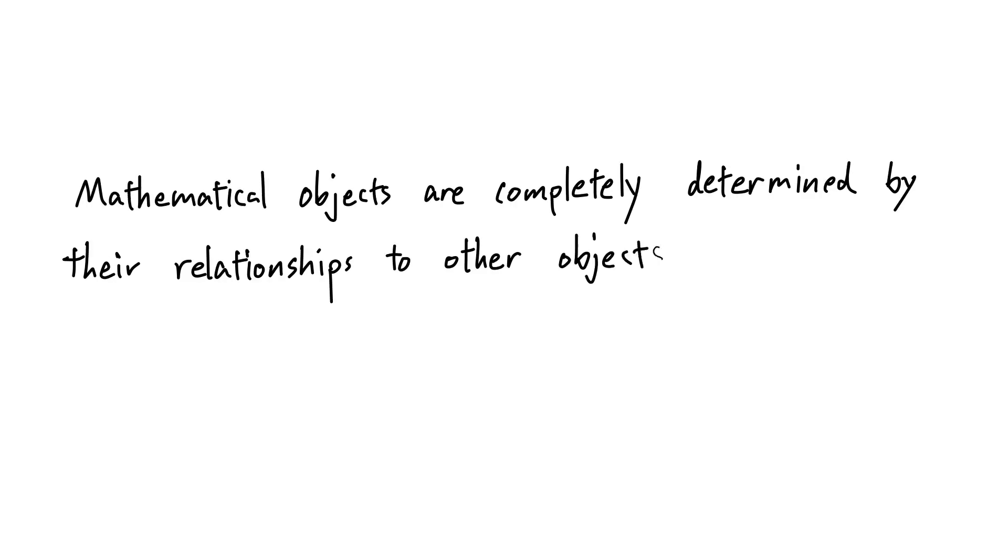I want to end the video with a discussion on the slogan that mathematical objects are completely determined by their relationships with other objects. This statement is only half true without univalence. Relationships with other objects only determines an object up to equivalence, and univalence is needed to go from equivalence to equality. This, I think, is the profound reason why we should embrace the univalence axiom.